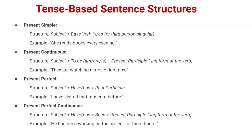Now let's understand the structure of present perfect: subject + have/has + past participle. We use 'have' with I, you, we, they, and 'has' with she, he, it, or a name. Past participle is the third form of any verb — for example 'written' (write, wrote, written). For example: 'I have visited that museum before.' Here 'I' is the subject, 'have' is used, 'visited' is the third form, and 'museum' is the object.